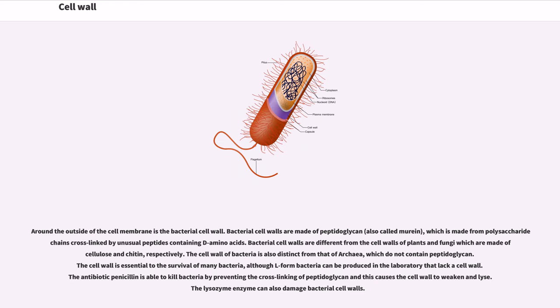Around the outside of the cell membrane is the bacterial cell wall. Bacterial cell walls are made of peptidoglycan, also called murein, which is made from polysaccharide chains cross-linked by unusual peptides containing D-amino acids. Bacterial cell walls are different from the cell walls of plants and fungi which are made of cellulose and chitin, respectively. The cell wall of bacteria is also distinct from that of archaea, which do not contain peptidoglycan. The cell wall is essential to the survival of many bacteria, although L-form bacteria can be produced in the laboratory that lack a cell wall. The antibiotic penicillin is able to kill bacteria by preventing the cross-linking of peptidoglycan and this causes the cell wall to weaken and lyse. The lysozyme enzyme can also damage bacterial cell walls.